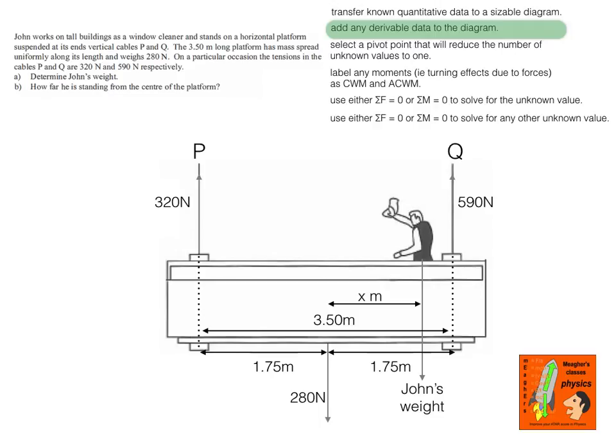We can add derivable data: the centre of mass is 1.75 metres from the line of action of the cable forces. We can put in John's weight because the sum of the forces down equals the sum of the forces up. We can put in John's distance x from the centre of mass as an unknown. The first part determines John's weight from the force balance, but the next part asks how far he is standing from the centre of the platform — we want to find x.